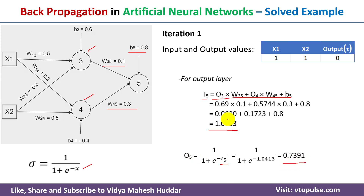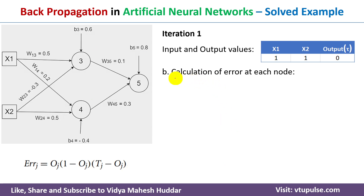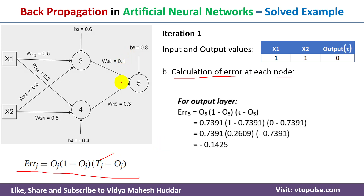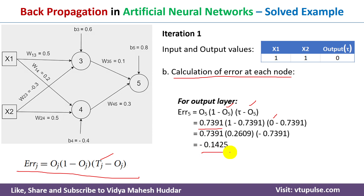Once the input and output values at each layer are found, the next step is calculation of the error at each node. The error formula is: error_j = o_j × (1 − o_j) × (t_j − o_j), where o is the output and t is the target (= 0 here). For neuron 5: error_5 = o5 × (1 − o5) × (t − o5). With o5 = 0.7391 and t = 0, we get error_5 = −0.1425.